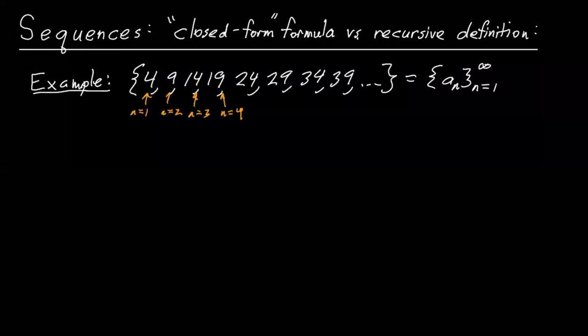So the sequence is a sub n from n equals one to infinity. The question I have for you is what, for example, is the hundredth term of the sequence? What is a sub 100? How do you list the hundredth term? There's a pattern. You can definitely see a pattern, right? So how do you identify the hundredth term?